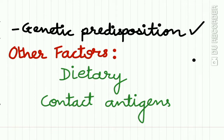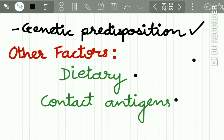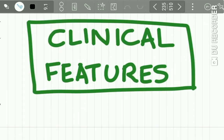Regarding the etiology of Melkersson-Rosenthal syndrome, there is a genetic predisposition to the syndrome, and other contributing factors include dietary factors and contact antigens.